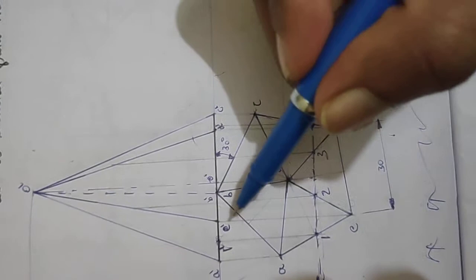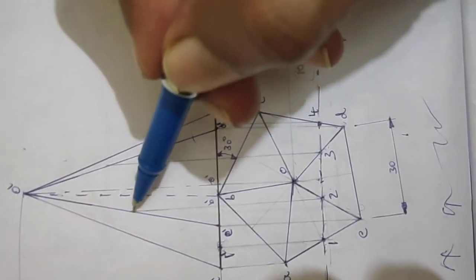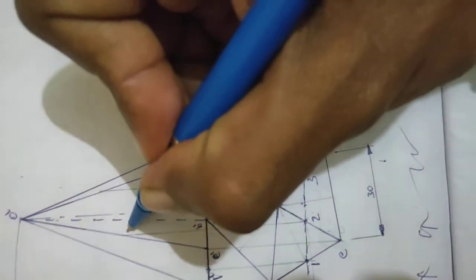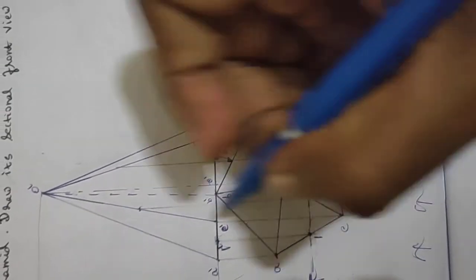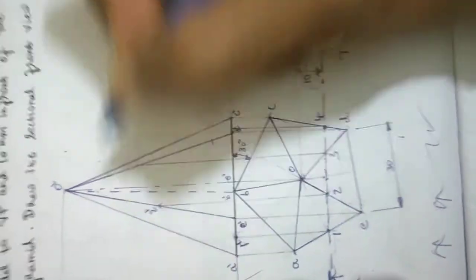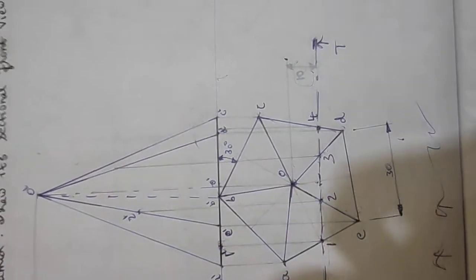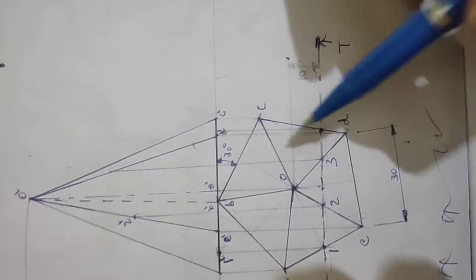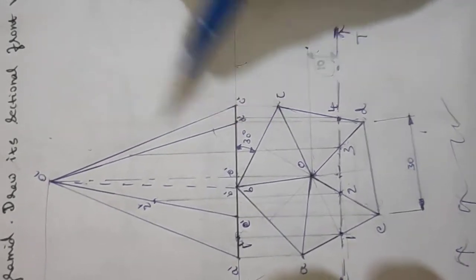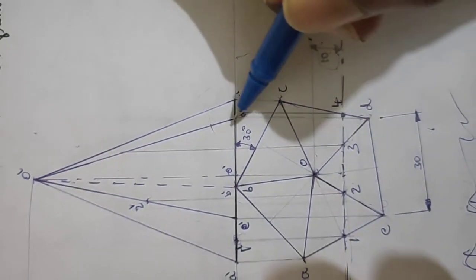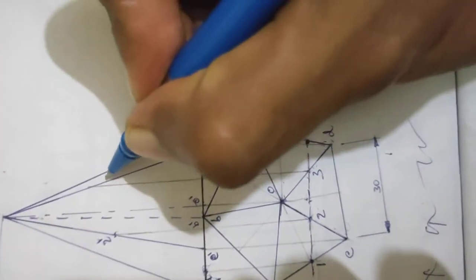E dash O dash intersects here. This gives point 2 dash. Then on the D dash O dash line, the intersection gives point 3 dash.